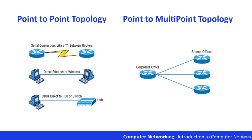You'll usually find point-to-point networks within many of today's wide area networks. As shown in part three of the diagram, a link from a computer to a hub or a switch is also a valid point-to-point connection. A common version of this setup consists of a direct wireless link between two wireless bridges.